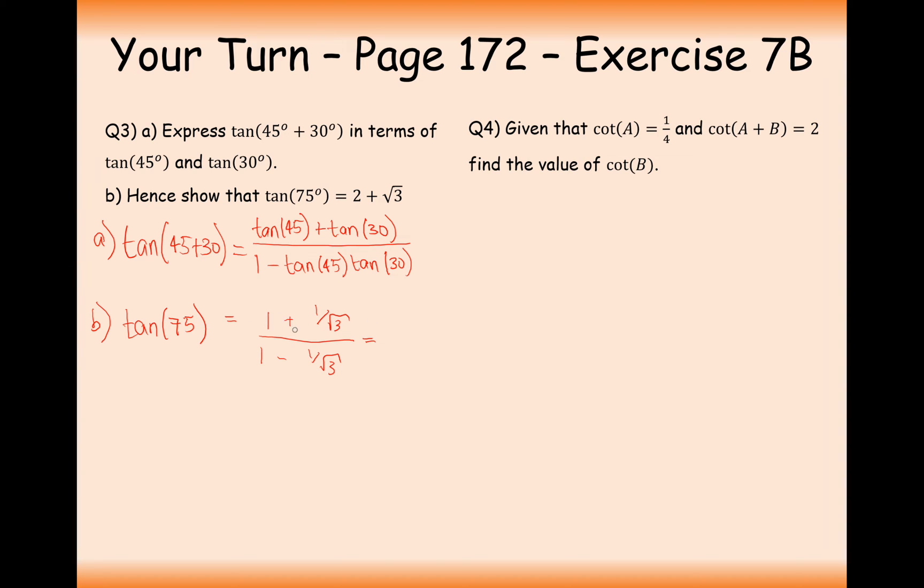Let's simplify the denominators here. So it's going to be root 3 plus 1 over root 3 all over root 3 minus 1 over root 3. Times top and bottom by root 3. So we get root 3 plus 1 over root 3 minus 1.